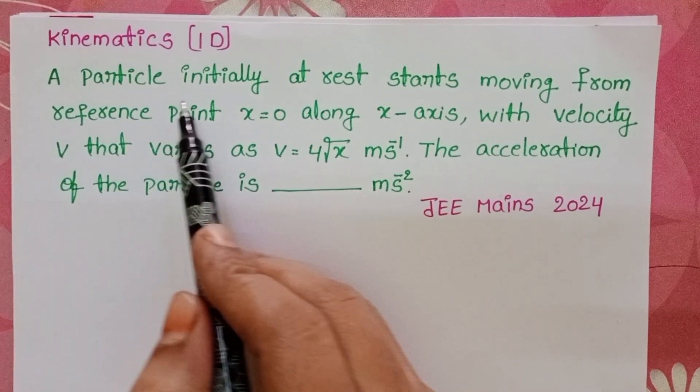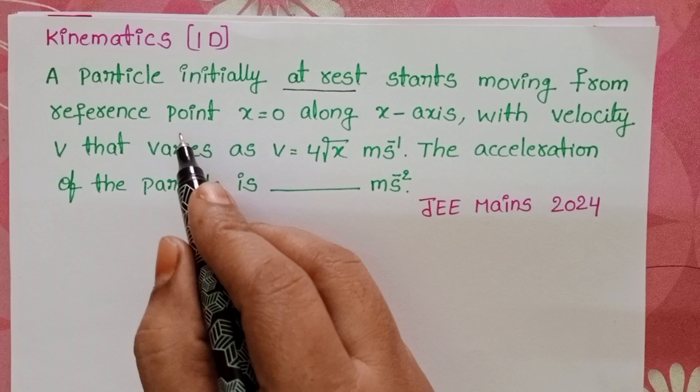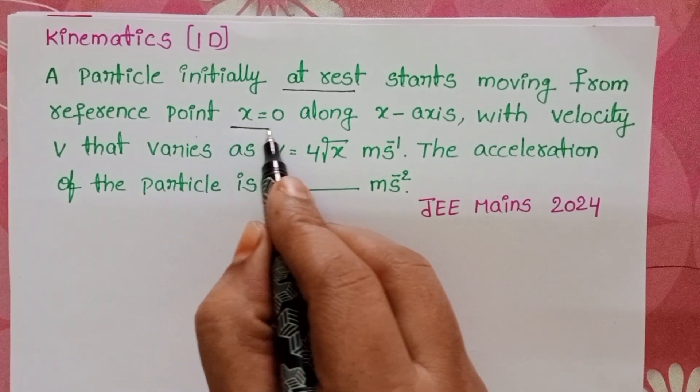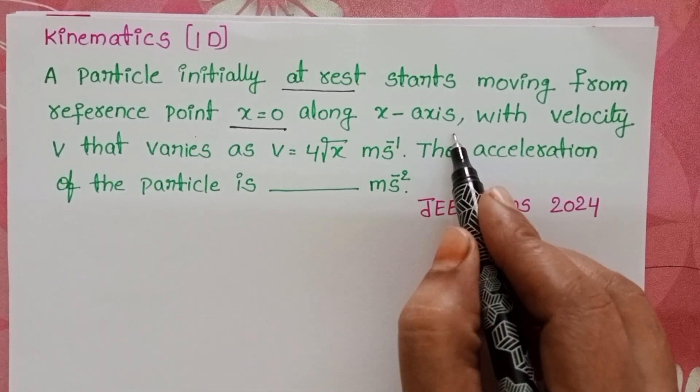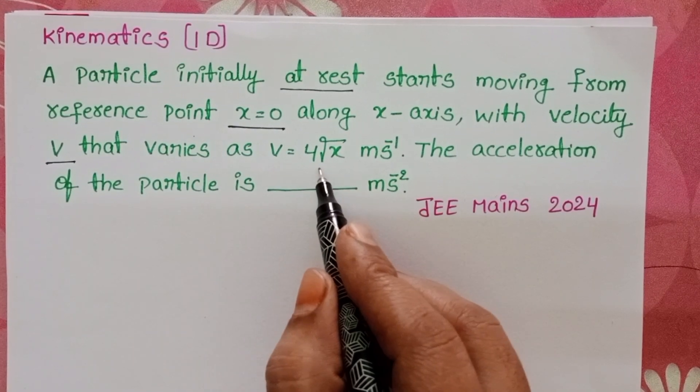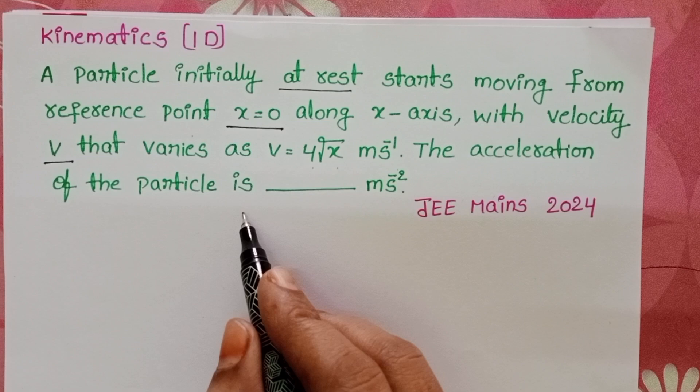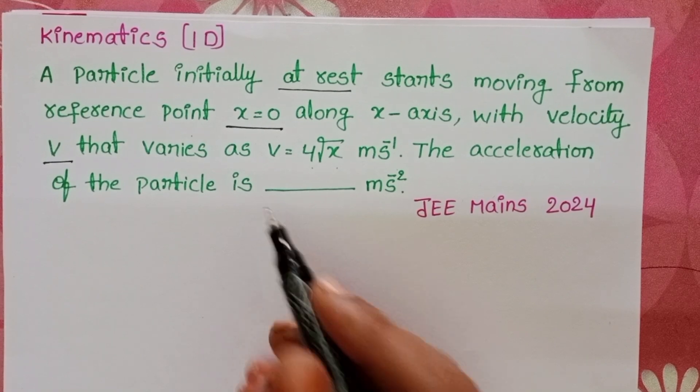A particle initially at rest starts moving from the reference point x equals 0 along x-axis with velocity v that varies as v equals 4 square root of x meter per second. The acceleration of the particle is?